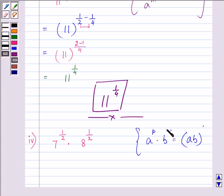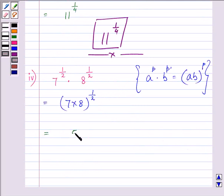As in the property, we have a common exponent, so we can multiply the bases and have the same exponent. So it will be 56 raised to the power 1 by 2, and this will become the answer of the last and final part which was given to us.